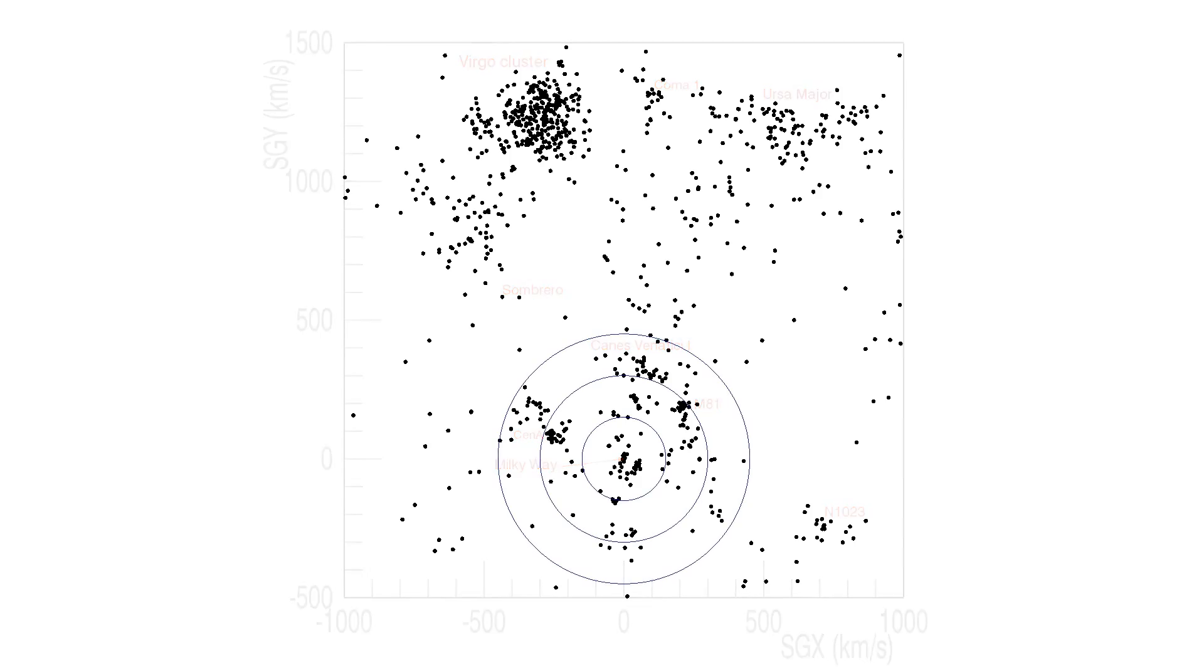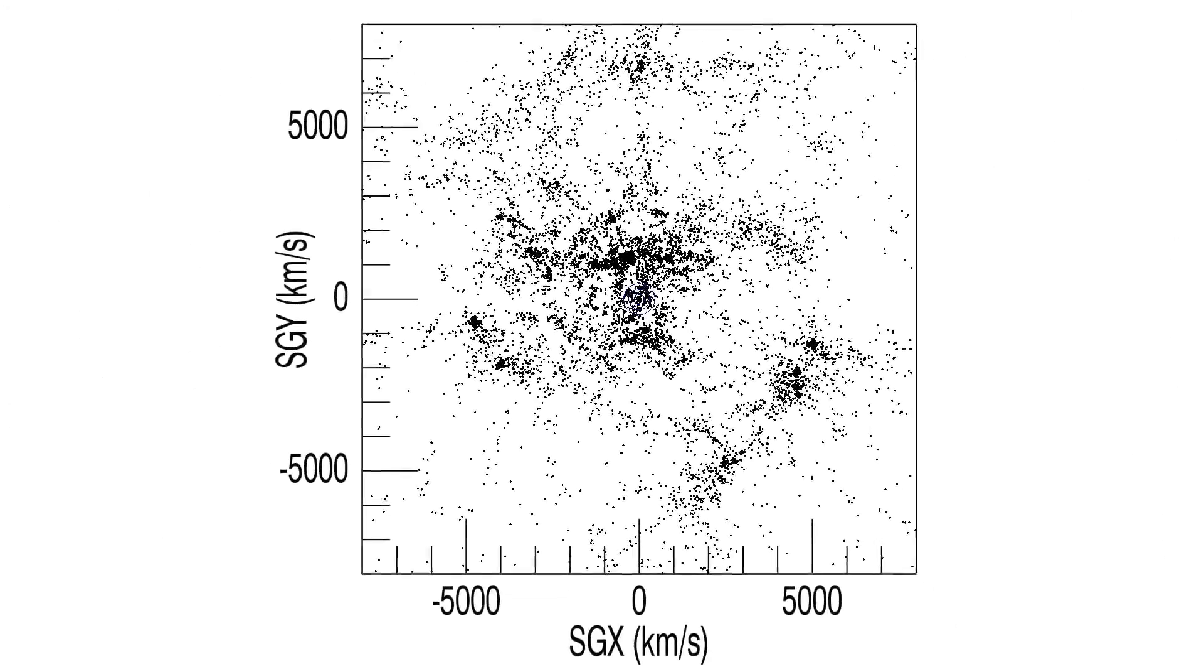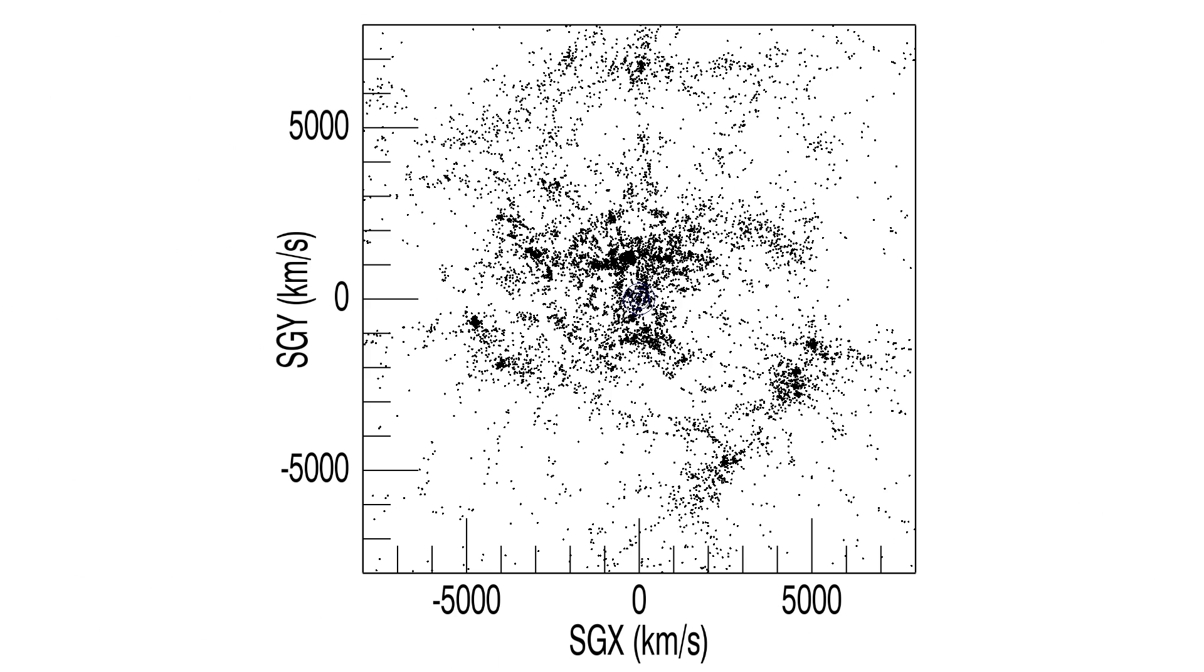With the next scene, we draw back to see a polar view of the entire width and length of the V8K catalogue, though what is shown is only a line of sight slab 2,000 km per second thick, centered on the supergalactic equator.